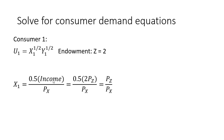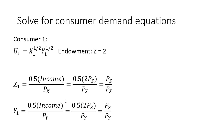Consumer one's income is two units of good z times the price of good z. Simplifying, 0.5 times 2, we have consumer one's demand for good x. For consumer one's demand for good y, the consumer will spend half his income on good y, divided by the price of good y. Substituting income as 2 times the price of good z — where 2 is the endowment of good z — and simplifying, we have the demand for good y for consumer one: the price of good z divided by the price of good y.